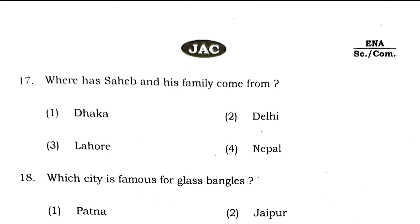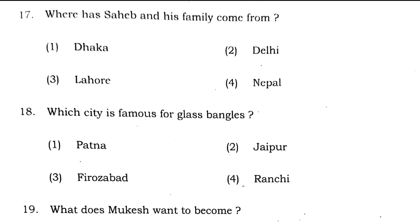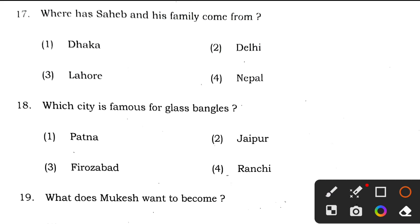Question 17: where has Sahib and his family come from? Very easy question — they came from Dhaka. So the answer to question 17 is option 1. Question 18: which city is famous for glass bangles? The answer is option 3, Firozabad.